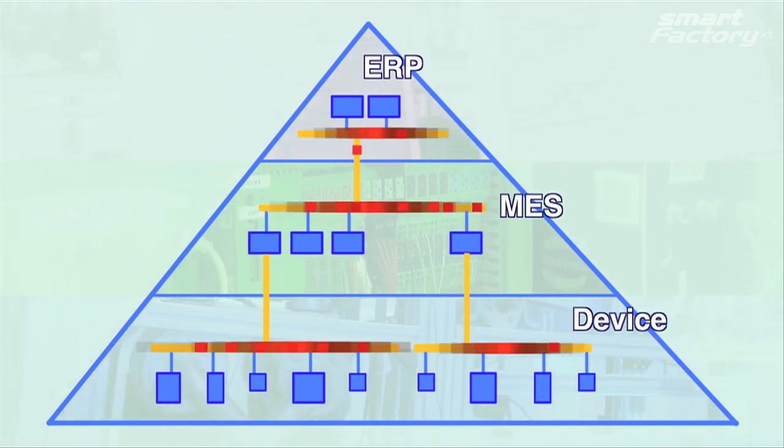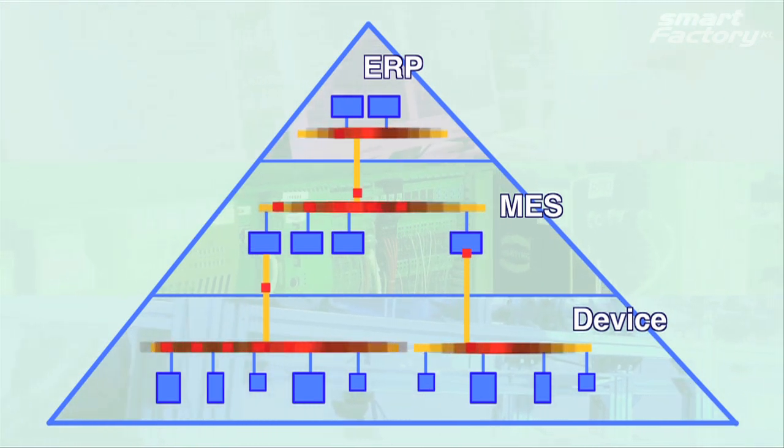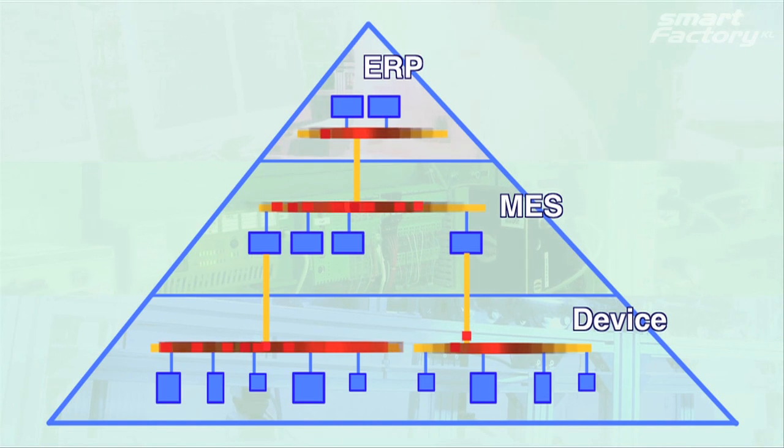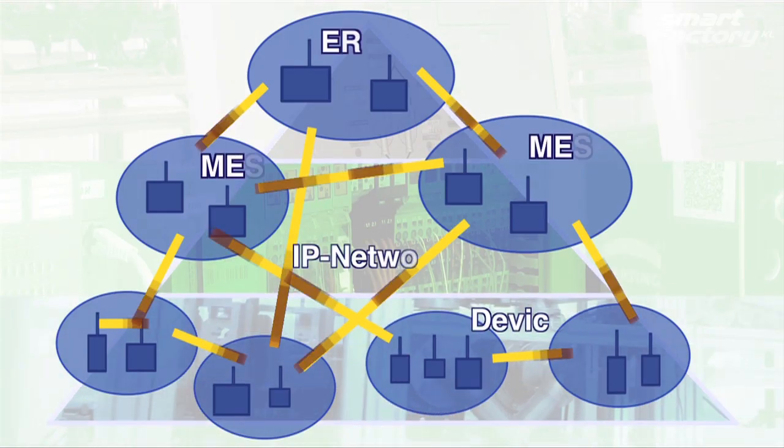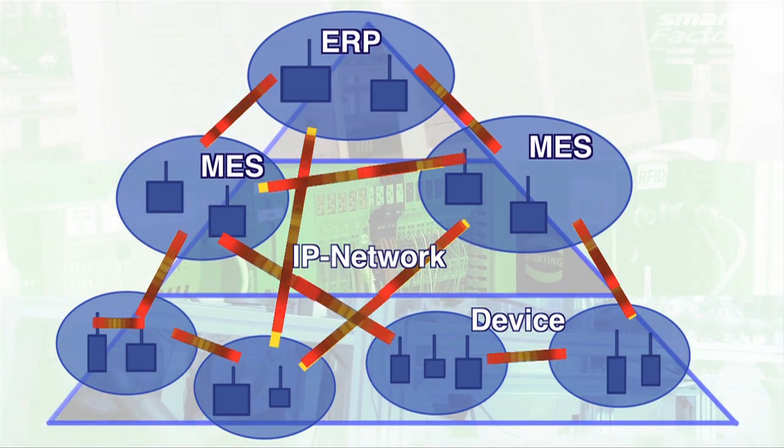Smart objects will also have an effect on the control architectures. Today's control pyramid, which is characterized by a strictly hierarchical structure with horizontal integration within the established ERP, MES and device levels, will be replaced by a network architecture with distinct vertical integration over all levels.